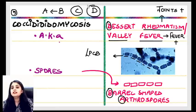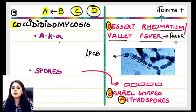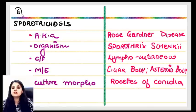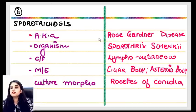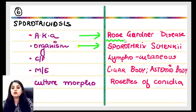Question: Barrel-shaped arthrospores are seen in — answer is Coccidioidomycosis (ABCD mnemonic). Another question with identical rose gardener history — same answer: Sporothrix schenckii. The history remains the same; only the options change in different exams.